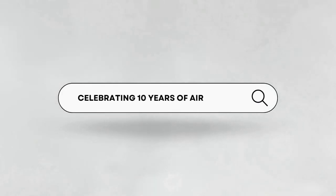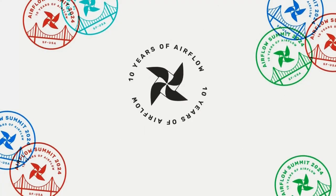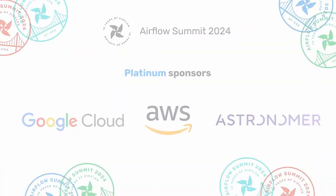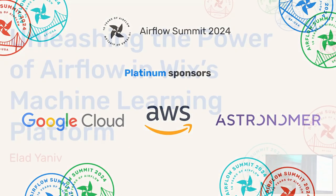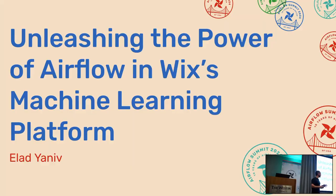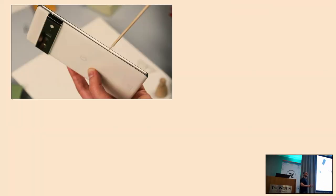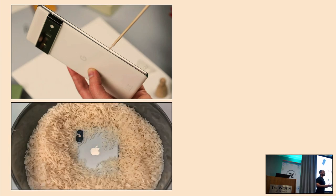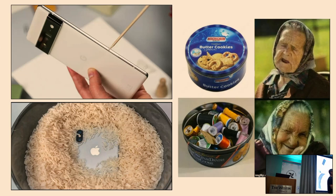Before we start, I want us to kick things off by appreciating how everyday items often find new unexpected purposes. Let's start with toothpicks — originally made to clean teeth, but also a clever tool for ejecting SIM cards out of our smartphones. And rice is a staple food, but also our go-to for rescuing wet electronics. And what about Danish butter cookie tins? Sure, they're great for cookies, but also a handy container for storing sewing supplies.